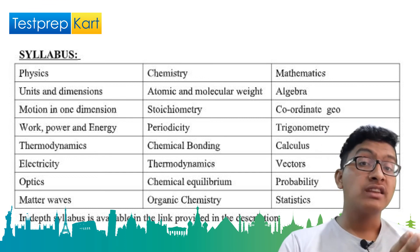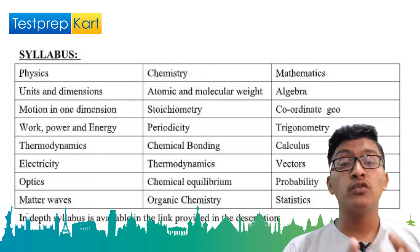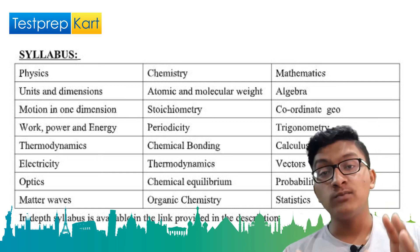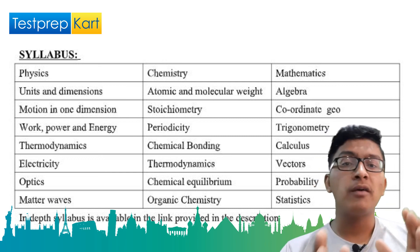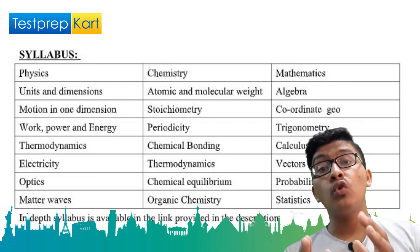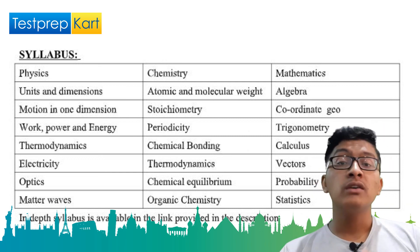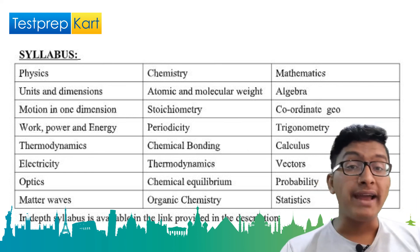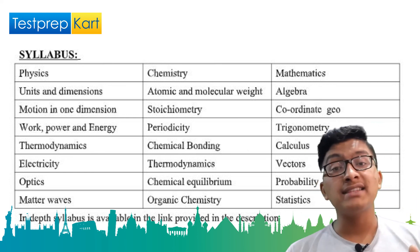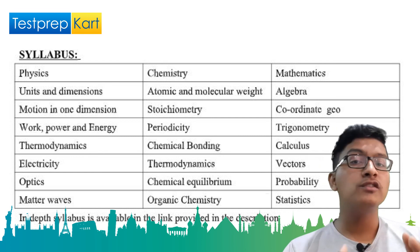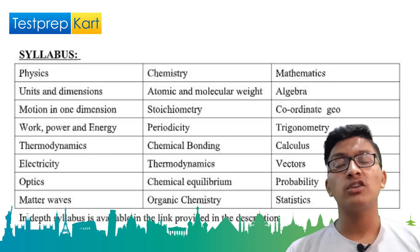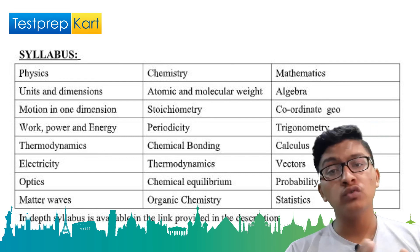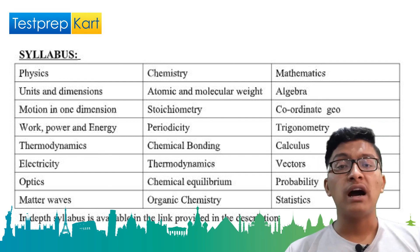For Chemistry, NCERT is more than enough, but apart from NCERT you can also go through O.P. Tandon for organic chemistry. For Mathematics, R.D. Sharma — both the 11th and 12th volumes — is more than enough for preparation.